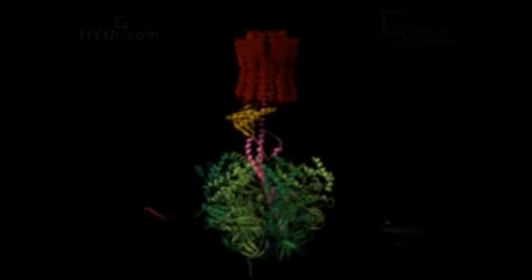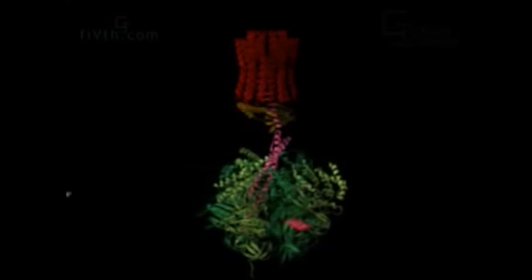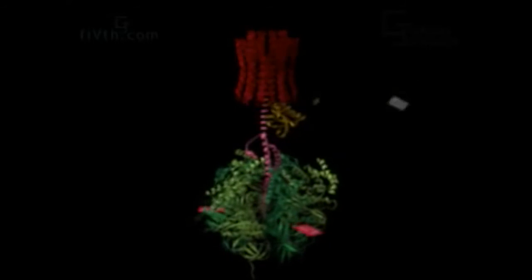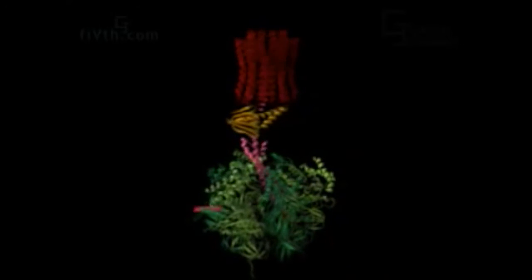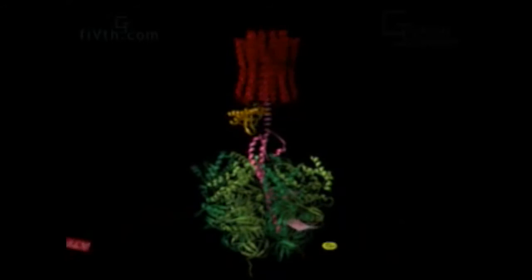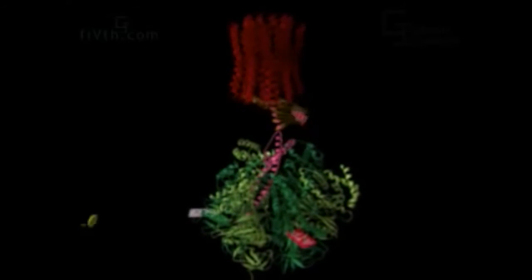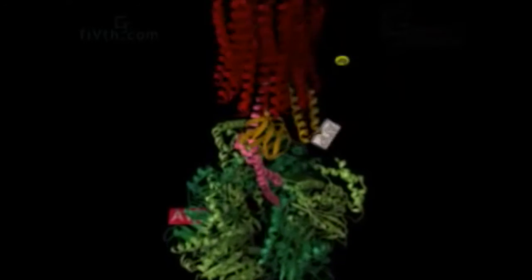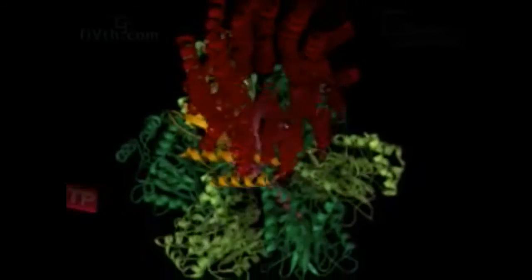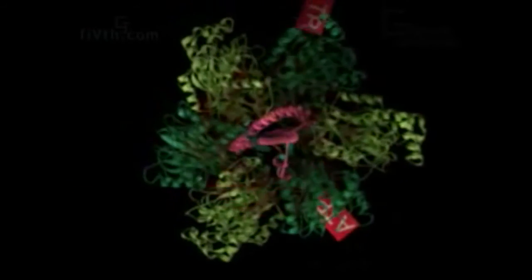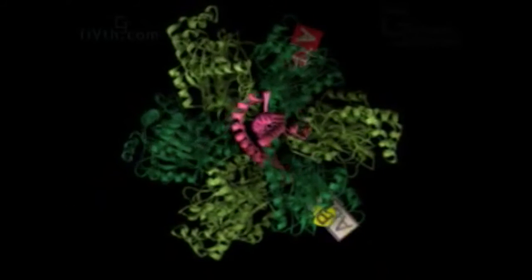The F1 ATPase portion of ATP synthase has been crystallized. The molecular structure shows the position of the central shaft in the center of the ATPase, influencing the conformation of the surrounding subunits. It is these conformational changes that drive the synthesis of ATP from ADP and inorganic phosphate.